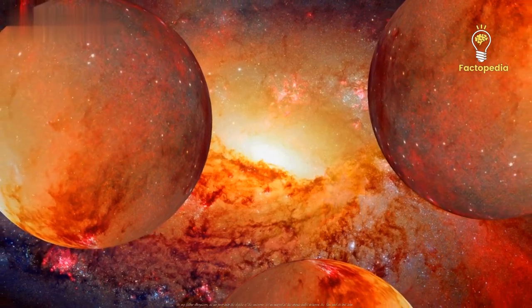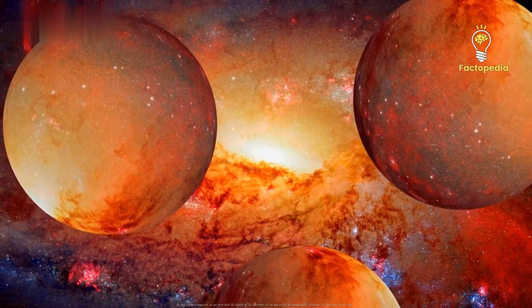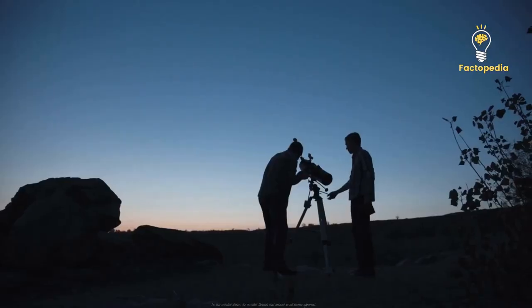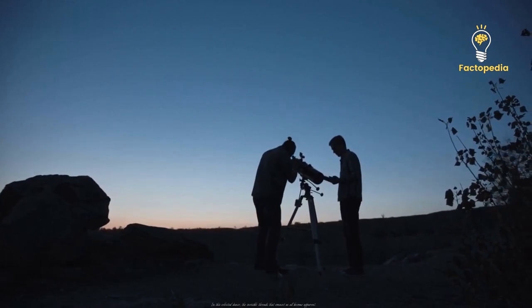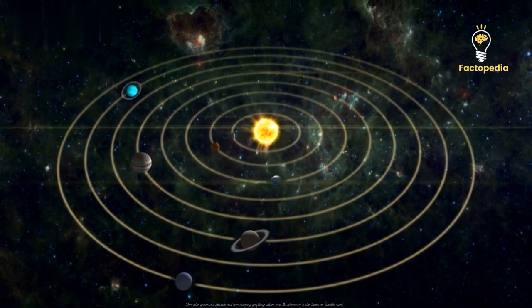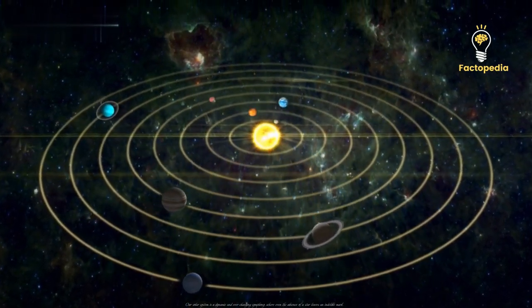So, my fellow stargazers, as we peer into the depths of the universe, let us marvel at the cosmic ballet between the sun and its lost twin. In this celestial dance, the invisible threads that connect us all become apparent. Our solar system is a dynamic and ever-changing symphony, where even the absence of a star leaves an indelible mark.